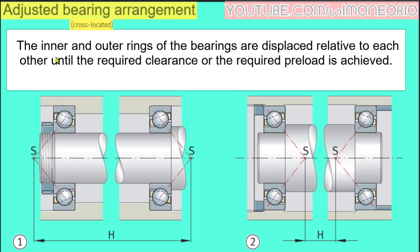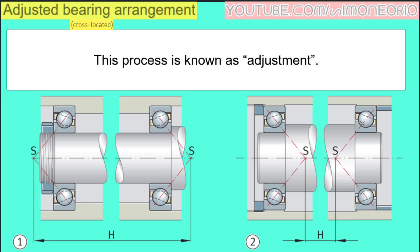The inner and outer rings of the bearings are displaced relative to each other until the required clearance or the required preload is achieved. This process is known as Adjustment.